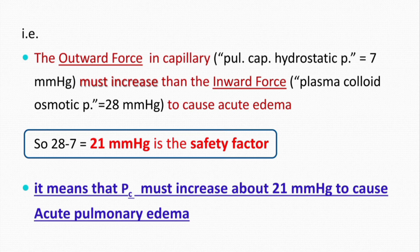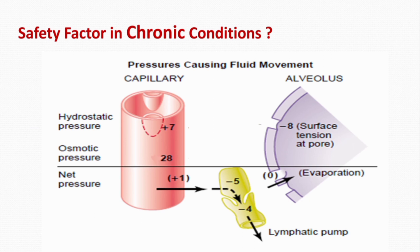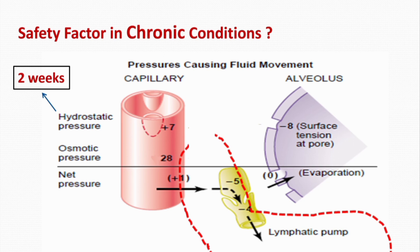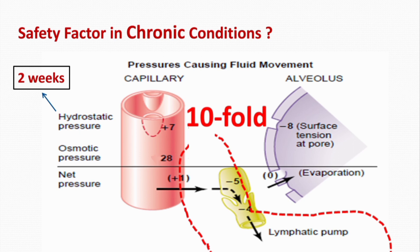In chronic conditions, when capillary hydrostatic pressure remains elevated for at least two weeks, the lungs become even more resistant to pulmonary edema because the lymph vessels expand greatly, increasing their capability of carrying fluid away from the interstitial spaces — up to tenfold their normal capacity. In patients with chronic mitral stenosis, capillary hydrostatic pressure of 40 to 45 mmHg has been observed without development of lethal pulmonary edema.